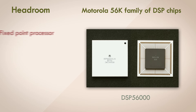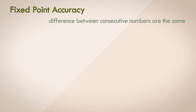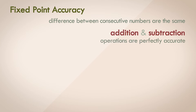Let's now look at accuracy. In fixed point numbers, the difference between consecutive numbers is constant. This is perfect for addition and subtraction — addition or subtraction of two fixed point numbers are perfectly accurate, with no error that can accumulate. Overflow is still a concern and has to be checked, but I'm going to assume for the rest of the video that this is handled.